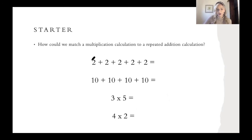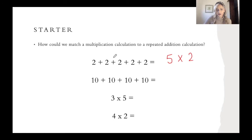So I've got one, two, three, four, five groups, and in each of my groups I have two. So that means that doing this repeated addition is the same as doing five times two, which we know equals ten.